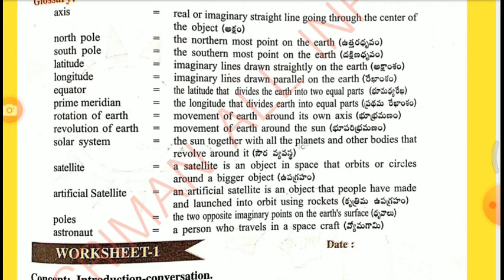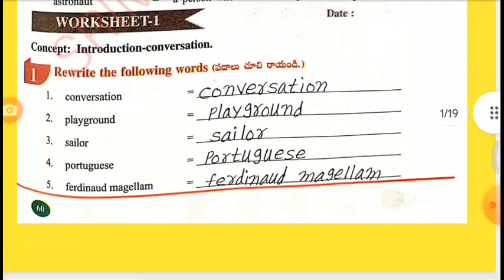Satellite: an object in space that orbits or circles around a bigger object. Artificial satellite: an object that people have made and launched into orbit using rockets. Poles: the two opposite imaginary points on the earth's surface. Astronaut: a person who travels in a spacecraft.